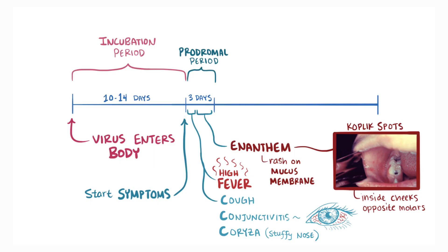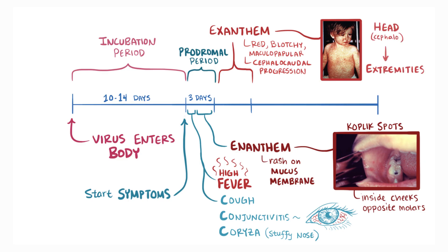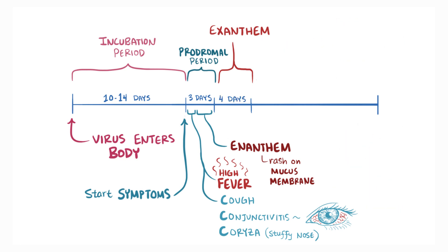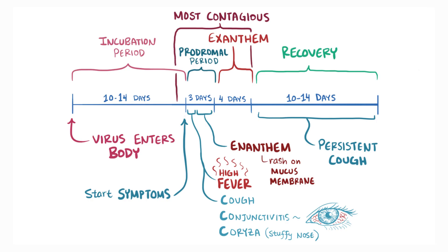After these initial prodromal symptoms comes the exanthem phase, where a red, blotchy, maculopapular rash spreads in a cephalocaudal progression — in other words, the exanthem starts at the head, or cephalo, and spreads to the extremities, or caudal. This rash fades after about four days and leads into the recovery phase, which can last for another 10 to 14 days, with the final symptom usually being a persistent cough. Infected people are most contagious from the final day of the incubation period through the prodromal and exanthem phase, roughly four days before to four days after the onset of the rash.